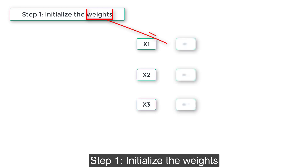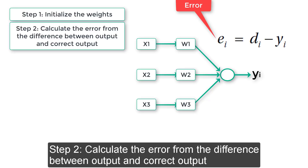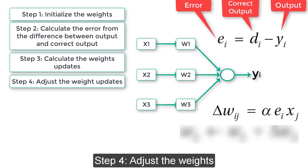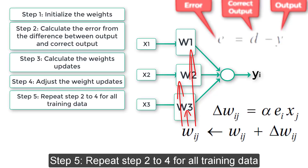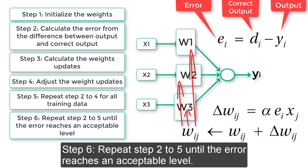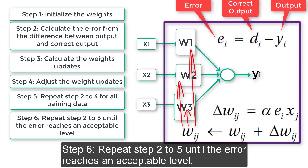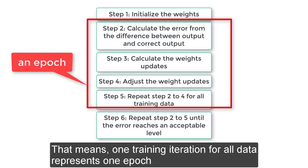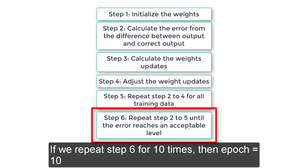Let's summarize the training process. Step 1: Initialize the weights. Step 2: Calculate the error from the difference between output and correct output. Step 3: Calculate the weight updates. Step 4: Adjust the weight updates. Step 5: Repeat steps 2 to 4 for all training data. Step 6: Repeat steps 2 to 5 until the error reaches an acceptable level. When all training data goes through steps 2 to 5, it is called an epoch — one training iteration for all data represents one epoch. If we repeat step 6 ten times, then epoch equals 10.